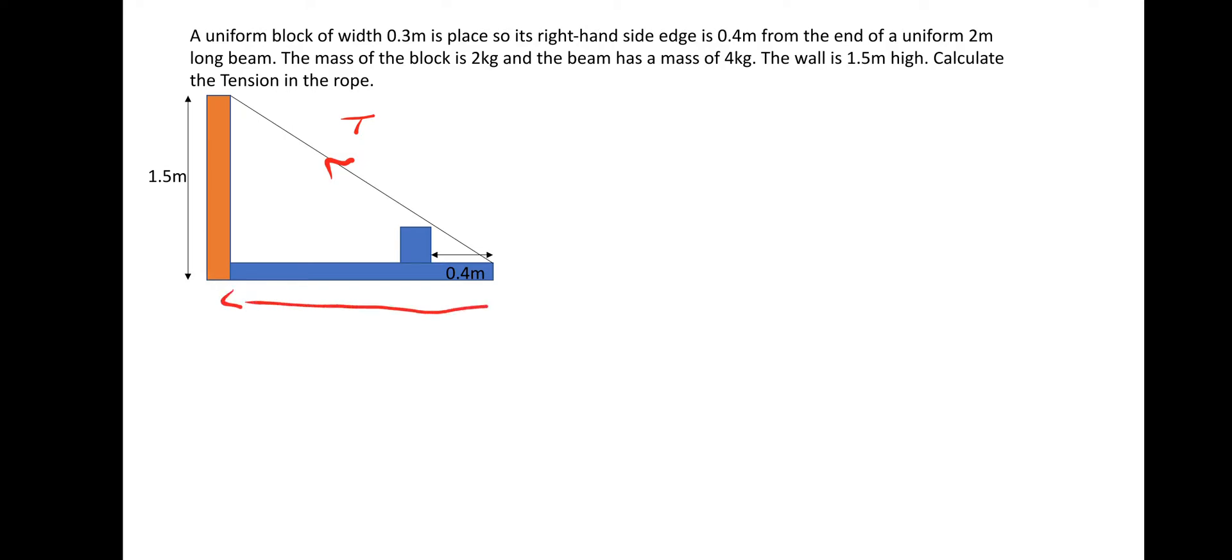So this beam is 2 meters and it's uniform so the mass of the beam is 4 kilograms. So from the center we get a force of 4 times G. So 4 times 9.81 gives us a force of 39.24 newtons. The block has a mass of 2 kilograms so the force is 2 times 9.81 which is 19.62 newtons.